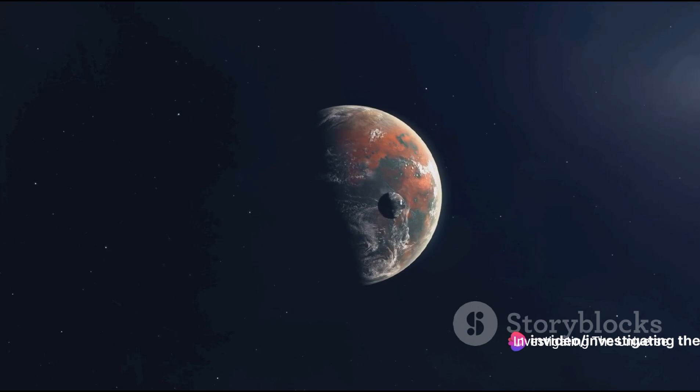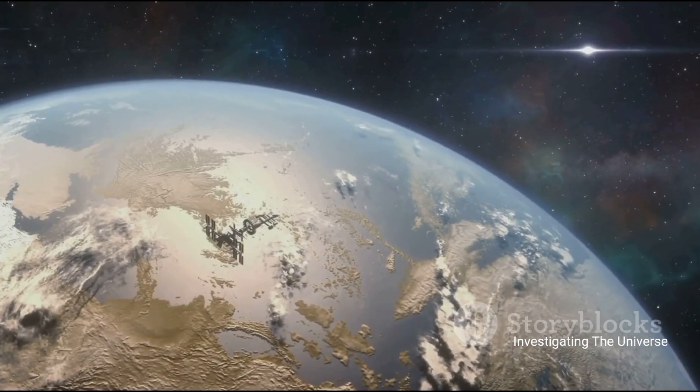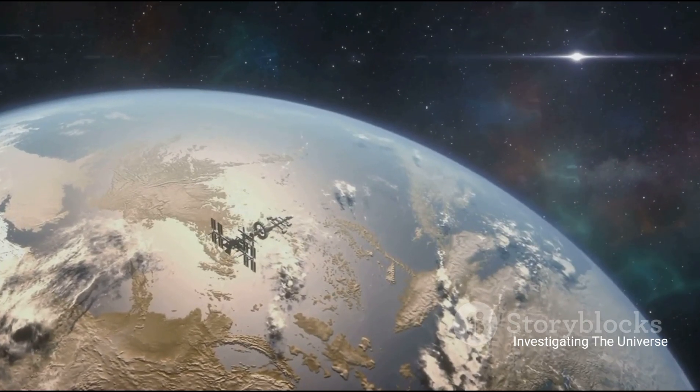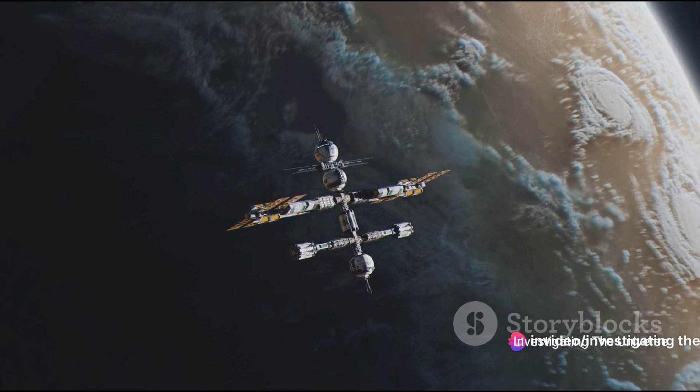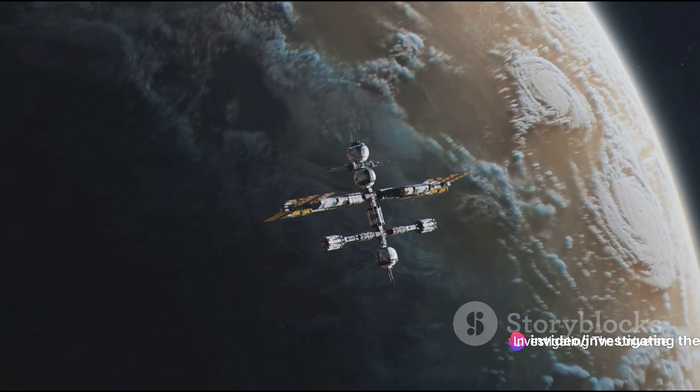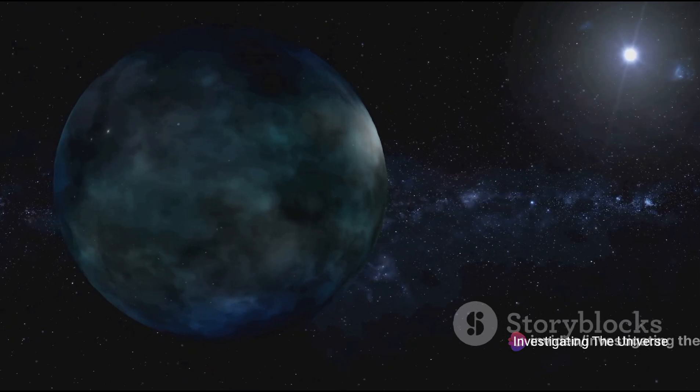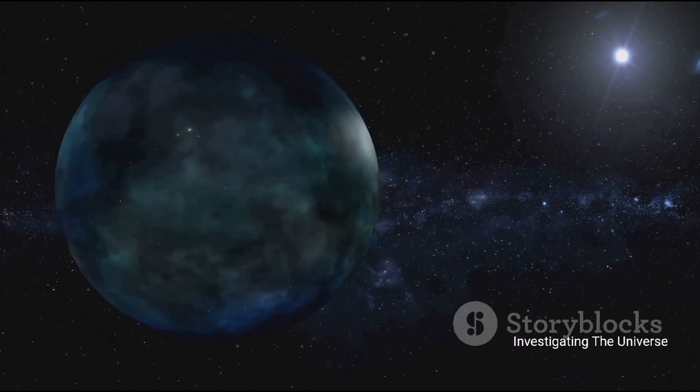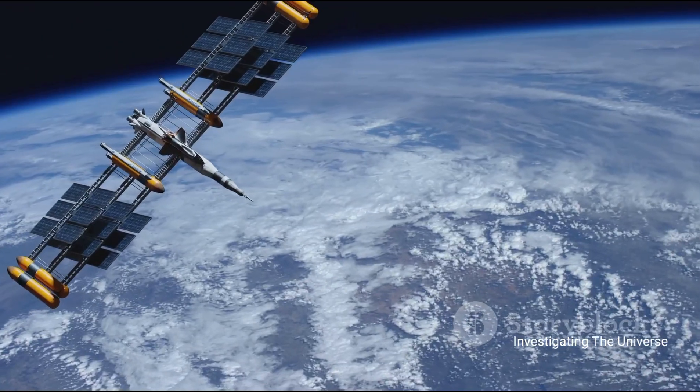Observations suggest that this exoplanet may have a rocky surface, somewhat similar to our home planet. However, it's a bit warmer over there, making it a different kind of destination for potential space tourists. The James Webb Space Telescope didn't just spot LHS-475b, it went a step further. Using its advanced capabilities, it has been studying the exoplanet's atmosphere and potential cloud cover.